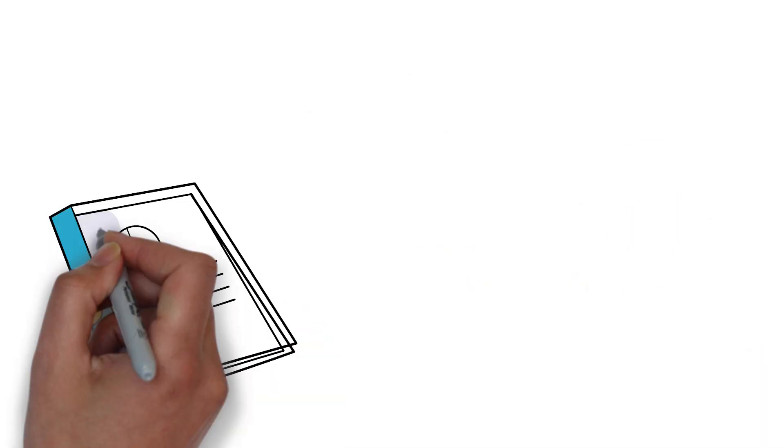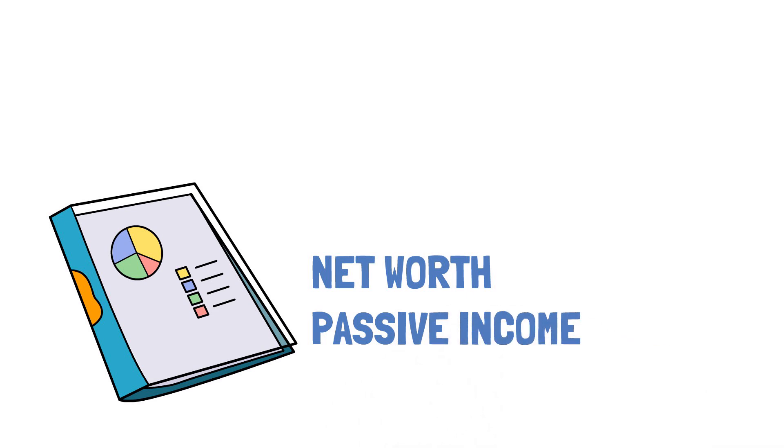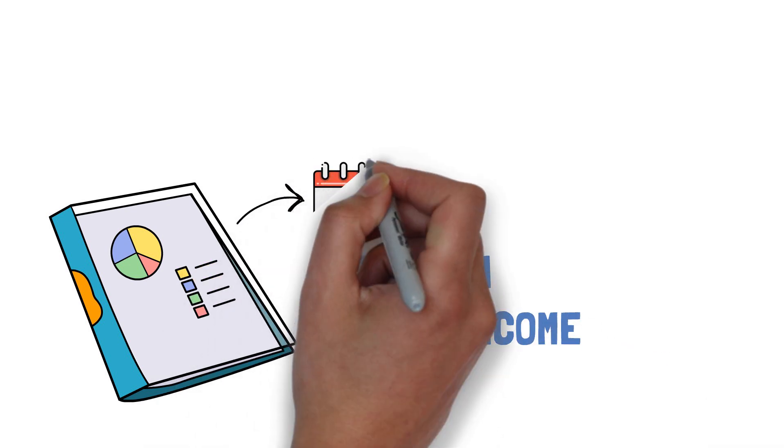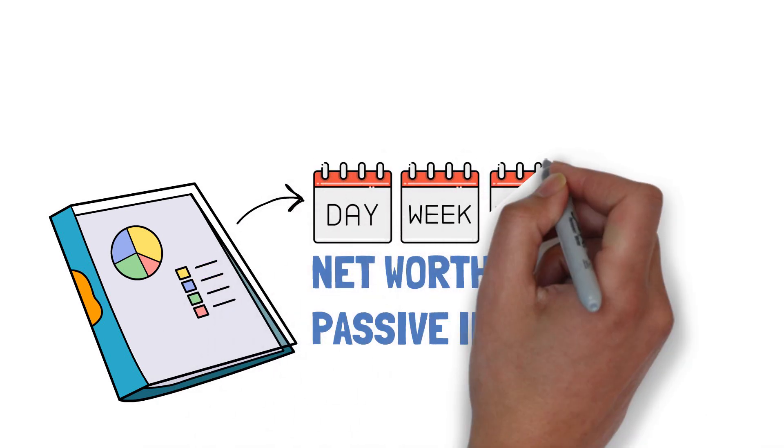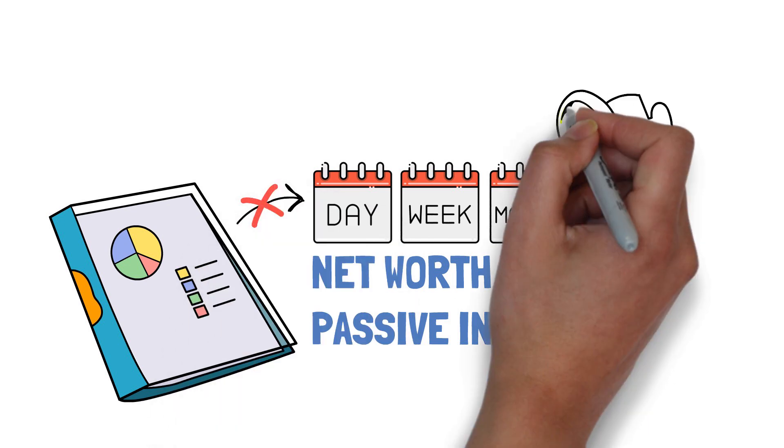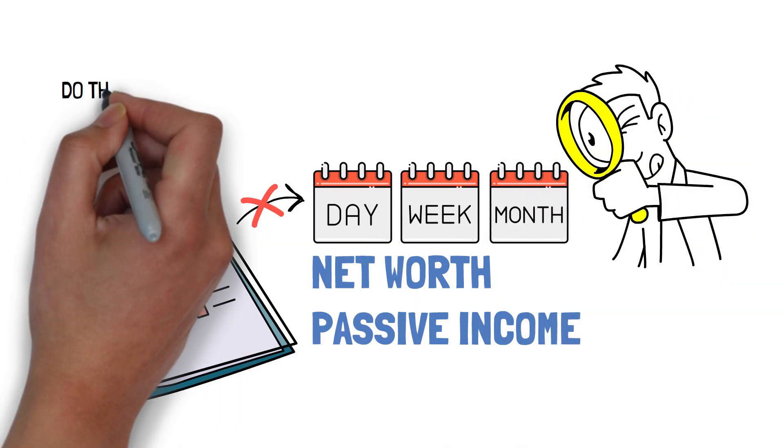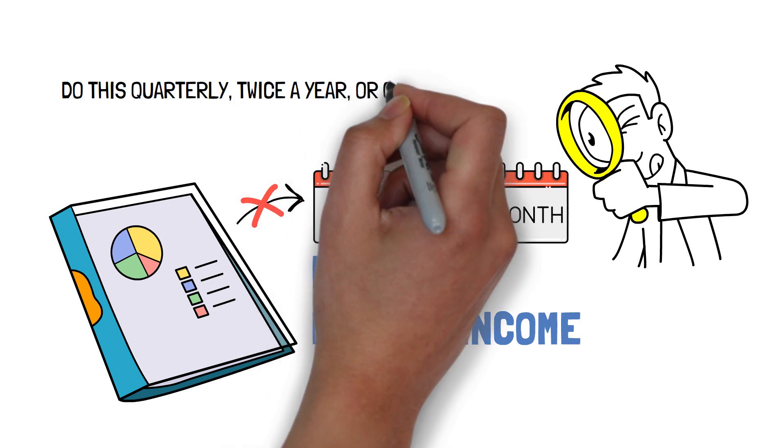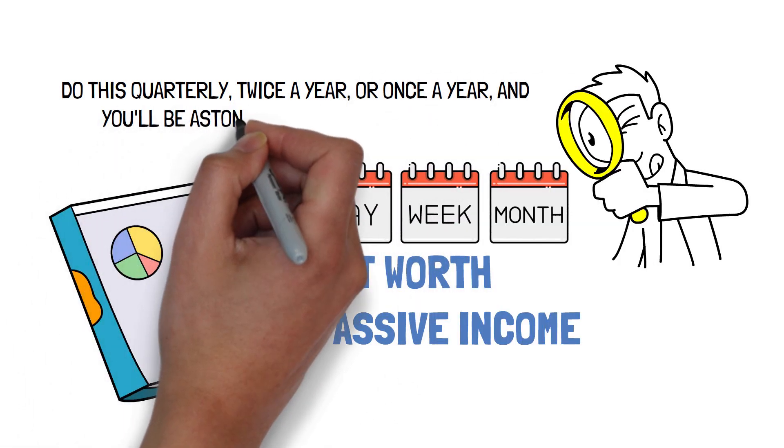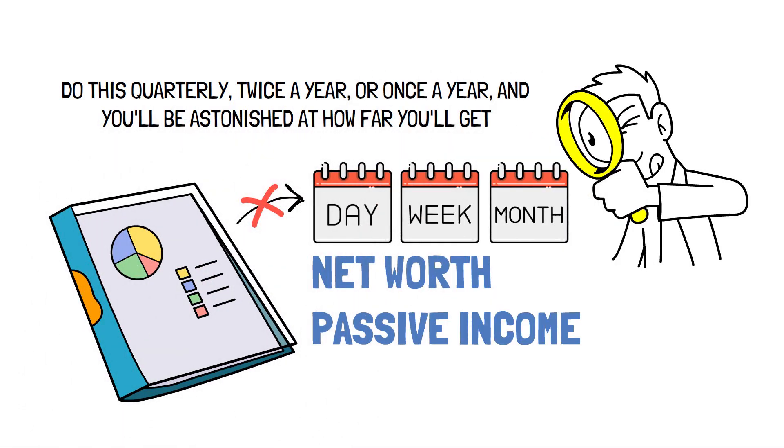Ideally, you should keep track of both your net worth and your passive income. This is not something you should do on a daily, weekly, or monthly basis. In fact, keeping a careful eye on these data may cause more harm than good. Instead, do this quarterly, twice a year, or once a year, and you'll be astonished at how far you'll get.